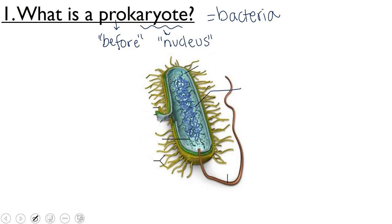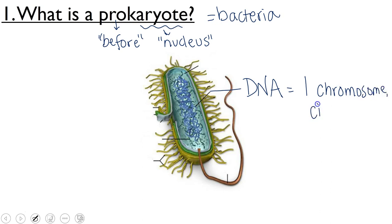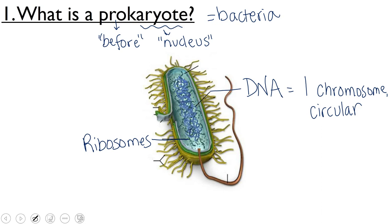So this blue squiggly stuff in the middle is the bacteria's DNA. And unlike humans who have 23 pairs of chromosomes, bacteria have one singular chromosome, and that chromosome is circular, unlike humans whose chromosomes are linear. Bacteria then use their ribosomes to translate the RNA made from that DNA into the proteins for the bacteria. Surrounding both the DNA and the ribosomes, just like in a eukaryotic cell, is the cytoplasm.